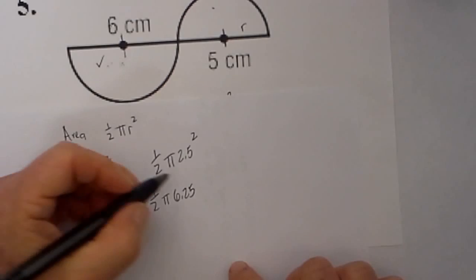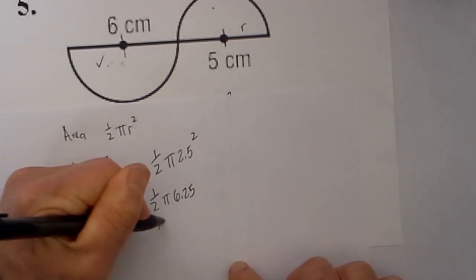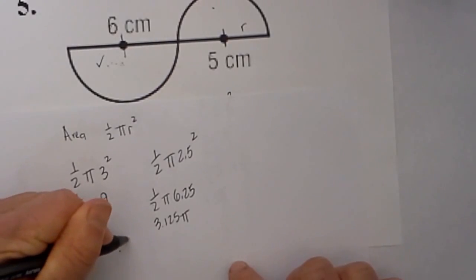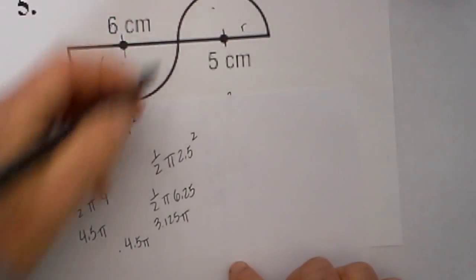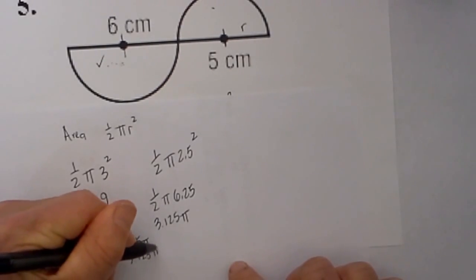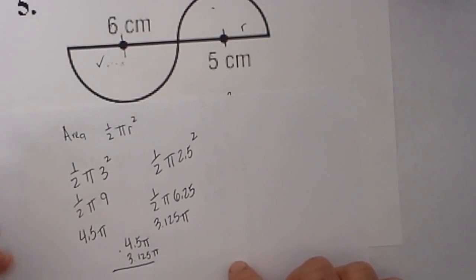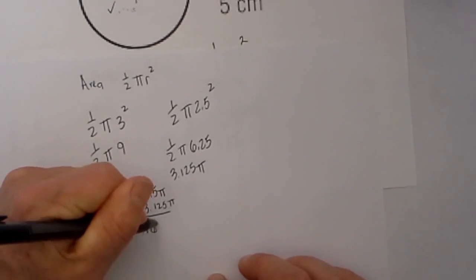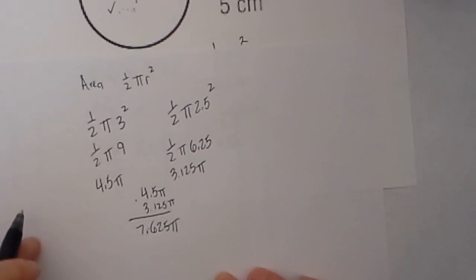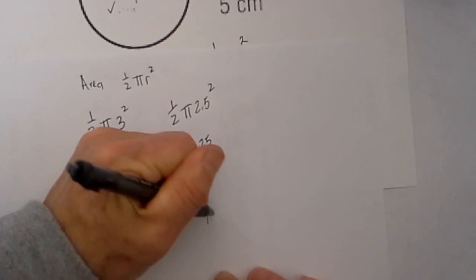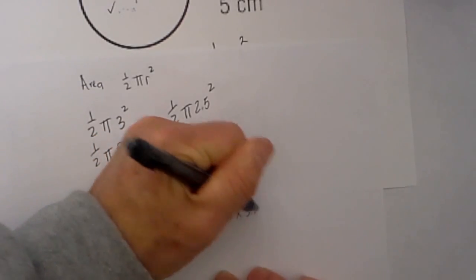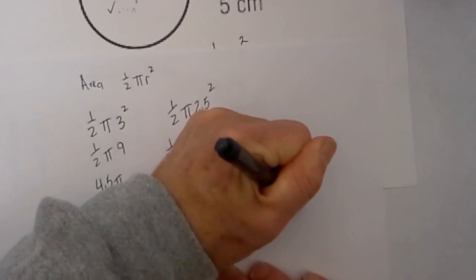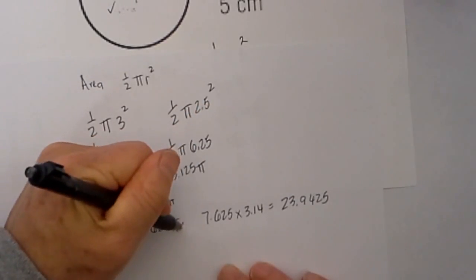So then one-half of 6.25 becomes 3.125 pi. So now I have the area of this side is 4.5 and the area of this semicircle is 3.125 pi. So then when you add these two together, that equals 7.625 pi. That is an exact answer. If you want an estimation, you can multiply 7.625 times 3.14, or you can add more places if you would like, and that gives you 23.9425. Both of these will be centimeters squared.